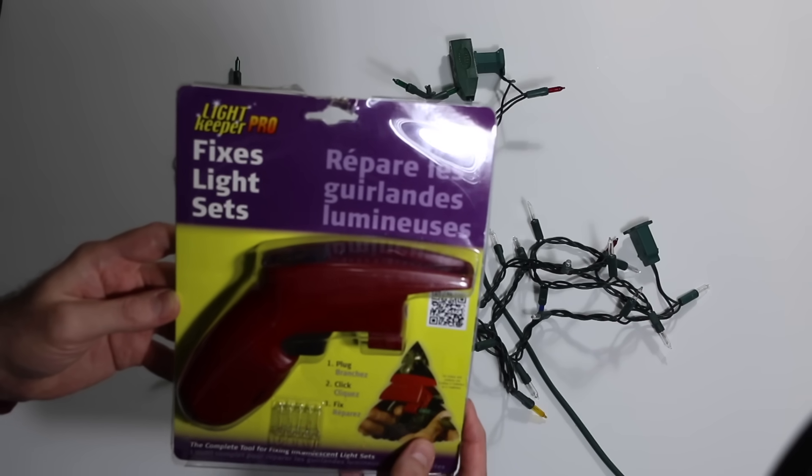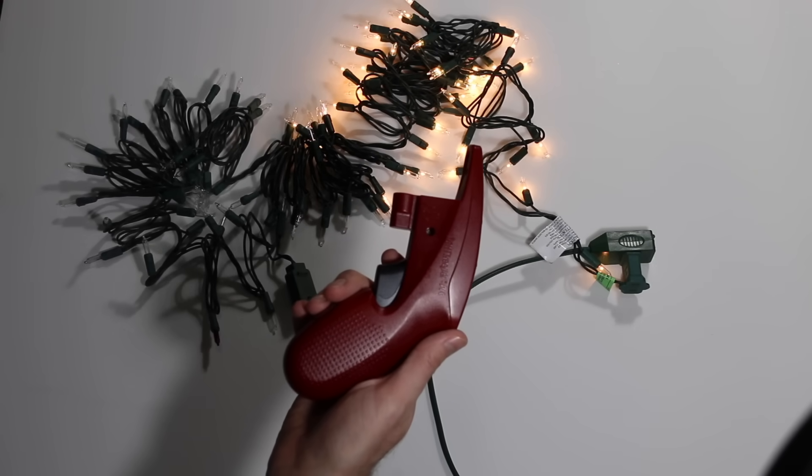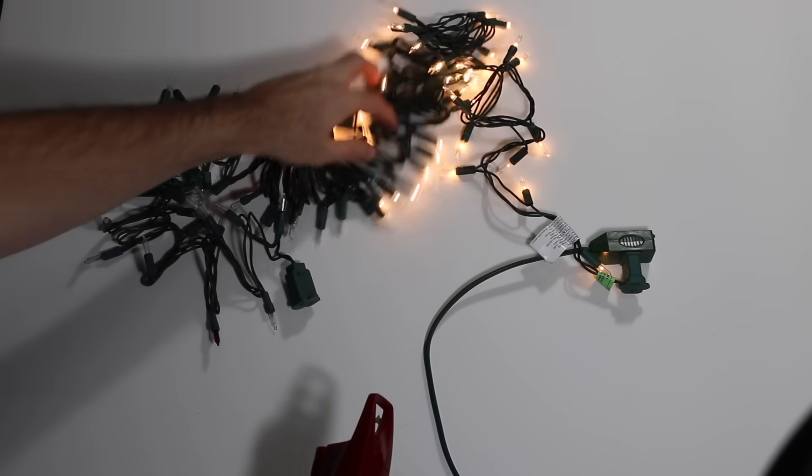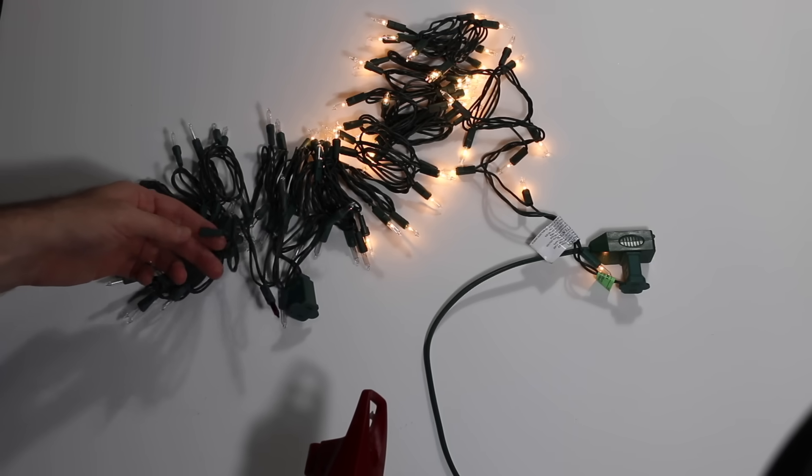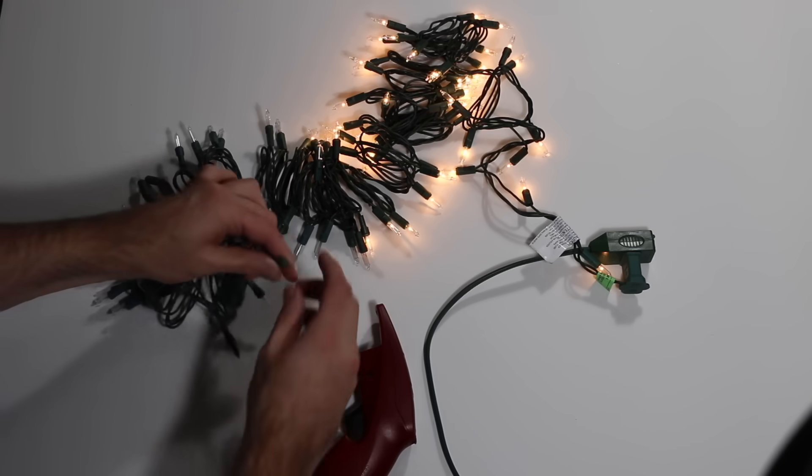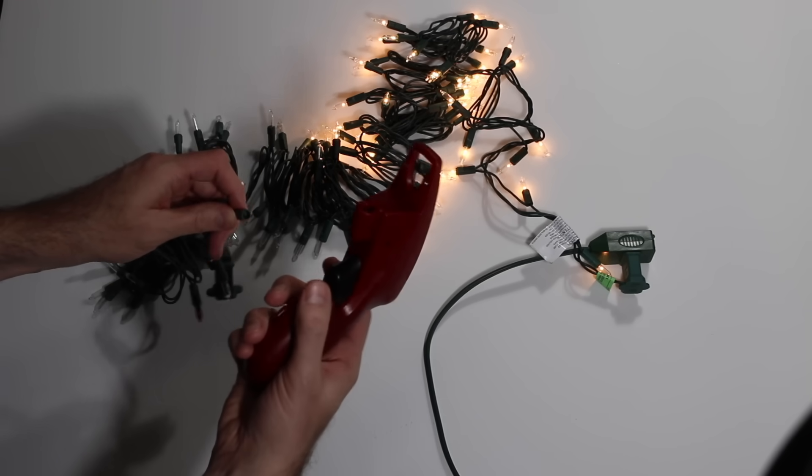Now I'll try the Lightkeeper Pro. I read the instructions for this, and it says to have the lights plugged in, and if there's multiple sections, then the section that's not lit, pull out a bulb, and then plug that socket into the socket on the unit.